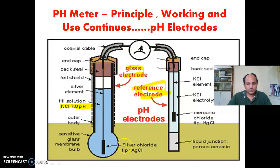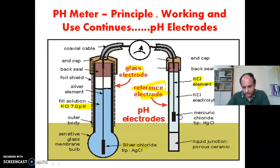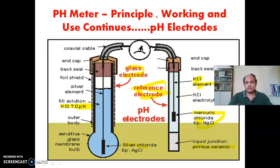This glass bulb is filled with HgCl or silver chloride. This is the second electrode of the pH meter, that is the reference electrode. There is an end cap, then a back seal, then it is filled with potassium chloride solution, and here there is a presence of mercury chloride or HgCl. This is the liquid junction, which is of porous ceramic.